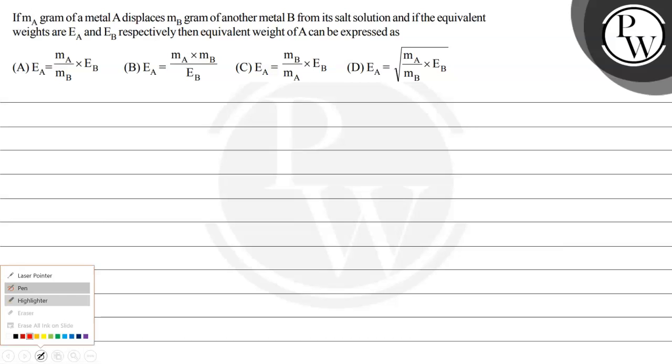Hello! Let's read this question. If ma grams of a metal A displaces mb grams of another metal B from its salt solution, and if the equivalent weights are Ea and Eb respectively, then equivalent weight of A can be expressed as - and we have four expressions in four options.